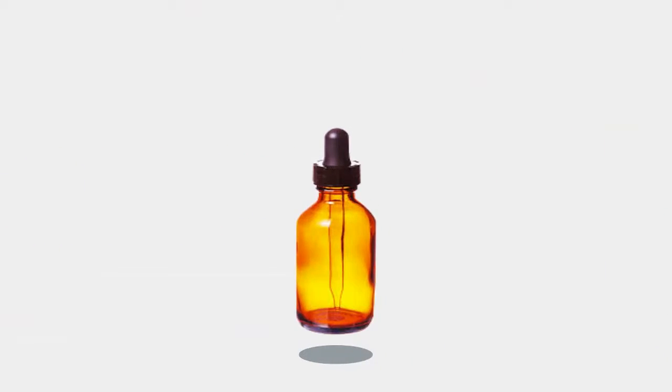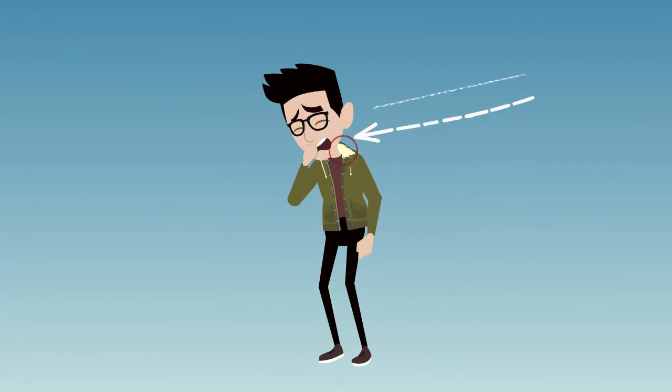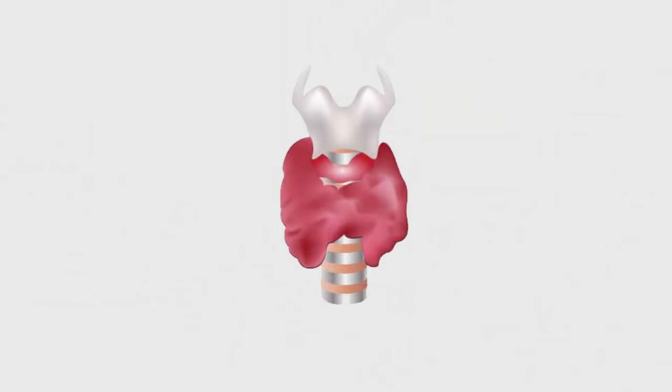Common thioamides include PTU or propylthiouracil, carbimazole, and methimazole. It is an antithyroid medication that is used to treat hyperthyroidism, which may be used prior to surgery or radiotherapy or as preparative therapy. It is also used for people who have Graves' disease.